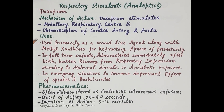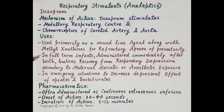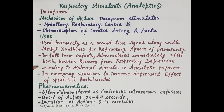Uses of doxapram: it is used primarily as a second-line agent along with methylxanthines — for example, theophylline — for refractory apnea of prematurity. In full-term infants, doxapram is administered immediately after birth, and it hastens or speeds recovery from respiratory depression in infants caused by maternal narcotic or anesthetic exposure.